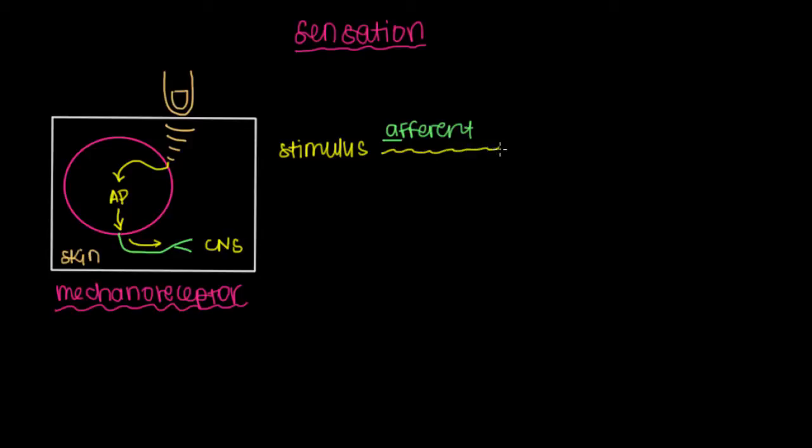And so that's what this afferent nerve fiber is. It's taking this stimulus and telling the central nervous system something's going on.